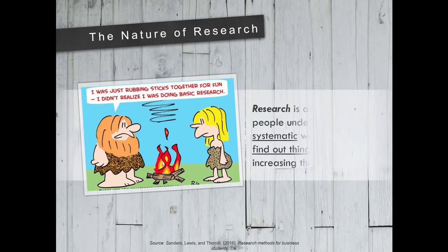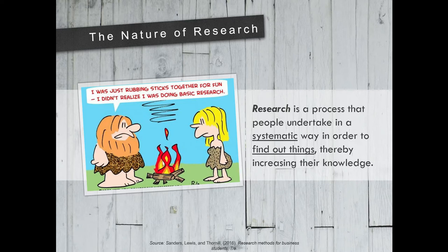So what is research? When we speak of research, it is a process that people undertake in a systematic way in order to find out things, thereby increasing their knowledge. When we say research is systematic, it means that research is based on logical relationships and not just beliefs. When we say research is a way to find out things, we mean that there is a multiplicity of possible purposes for research.